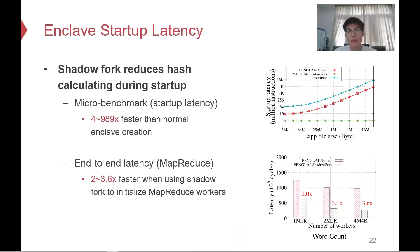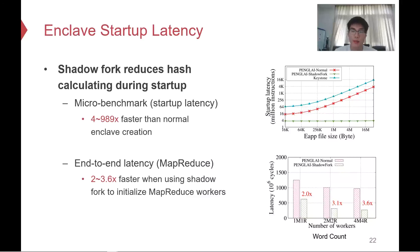Third, we test the enclave setup latency. We use Shadow Fork to boost secure memory initialization. In the micro-benchmark, Shadow Fork brings a 4 to 1000 times speedup over normal enclave creation, with improvement mainly coming from reducing page measurement. For end-to-end improvement using MapReduce as a test case, Shadow Fork is 2 to 3.6 times faster than normal creation, scaling from a single worker to multiple workers.